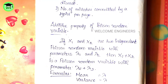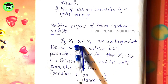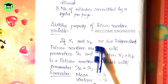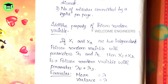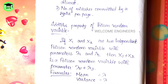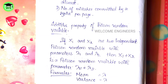For example, if X1 is the number of defective items produced and X2 is the number of deaths due to a rare disease, these are two independent Poisson random variables with no connection between them. Then X1 + X2 is a new Poisson random variable with parameter lambda1 + lambda2.